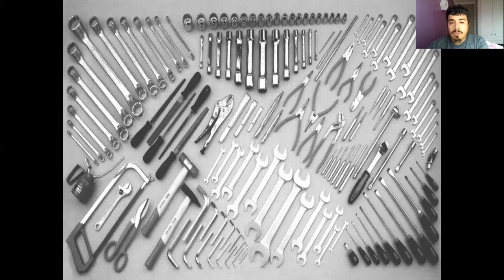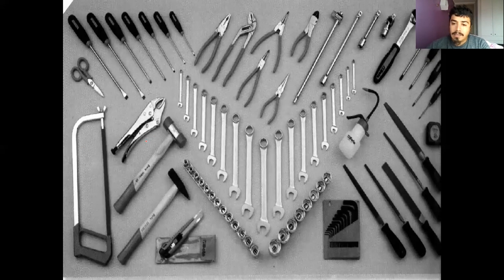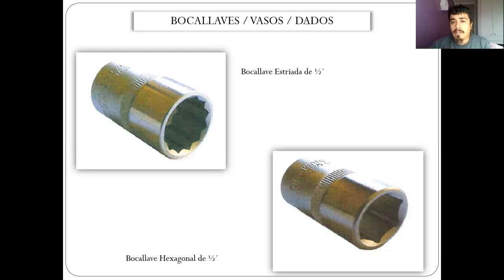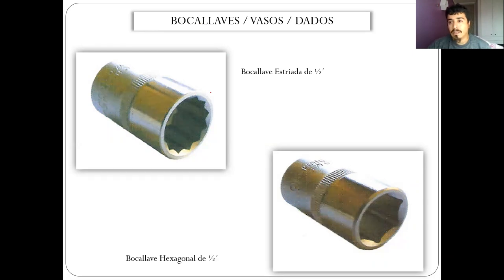Podemos ver un sinfín de herramientas clave: aceitera, grasera, llave Allen, los vasos, los dados. Dependiendo de la empresa y del país donde va a trabajar, tienen diferentes nombres. El bocallave o vaso, en Chile es más utilizado el 'dado'. Pero muchas empresas de capital extranjero utilizan otra nomenclatura, hay que conocer diversos nombres. También hay que tener cuidado si la información está en pulgadas o en el sistema internacional.